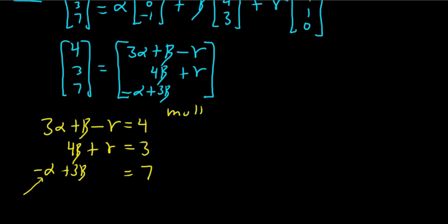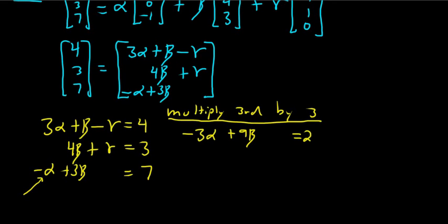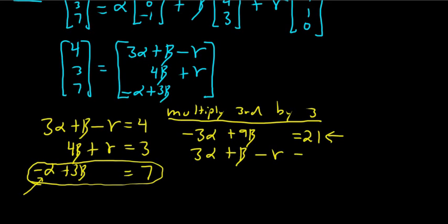So let's multiply third by 3. We're going to get negative 3 alpha plus 9 beta and that's equal to 21. 3 times 7 is 21. So I just multiplied this bottom one by 3. Now I'm going to write the first one again. So 3 alpha plus beta minus gamma equals 4. And now we can add these. So these cancel, so we get 10 beta minus gamma equals 25.